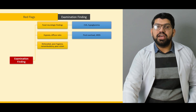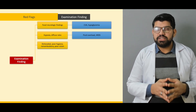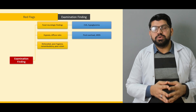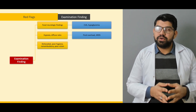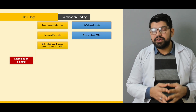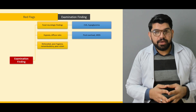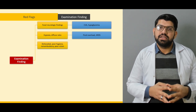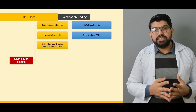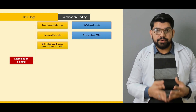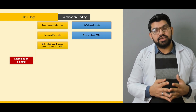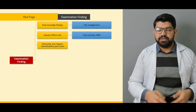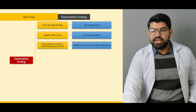Poor hygiene, non-ambulatory status, and poor vision are important examination findings. Poor hygiene can cause recurrent infections. Diabetic patients already prone to recurrent infections can have an additive worsening effect from poor hygiene, leading to septicemia. Patients who are bed-bound and non-ambulatory can have very poor outcomes with diabetes, presenting with hypoglycemia or hyperglycemia. Bed sores can be a source of infection. Diabetic retinopathy can cause poor vision, leading to inability to access or administer medications.